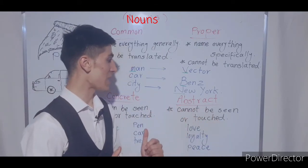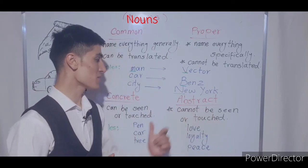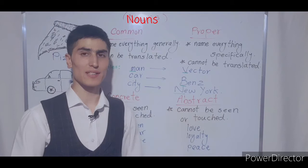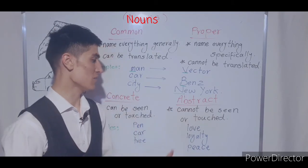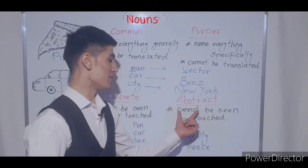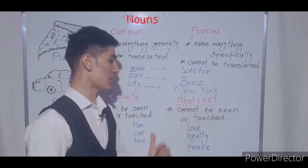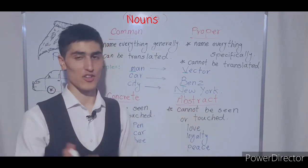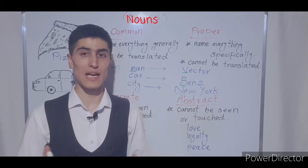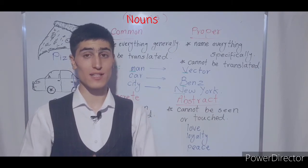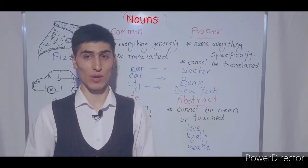Abstract nouns are those types of nouns that cannot be seen or touched, or they don't have physical existence.